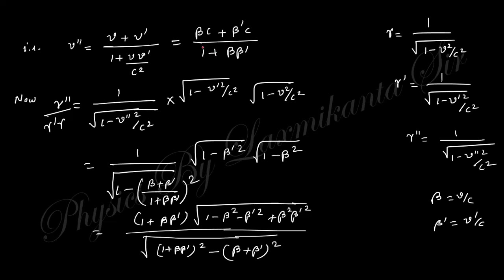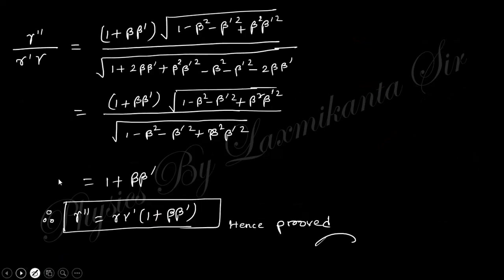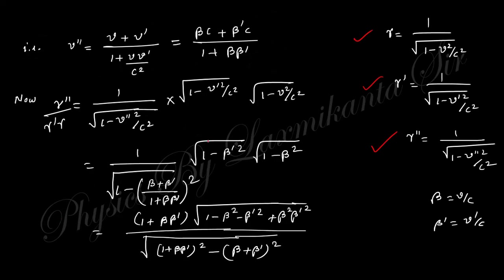Following the velocity addition equation, we obtain the expression for v double prime. Using beta = v/c, so v = beta*c; v' = beta'*c; we express v double prime in terms of beta and beta prime. Then gamma double prime is obtained in terms of gamma and gamma prime using those expressions. Following this process, you obtain the final expression for gamma double prime.